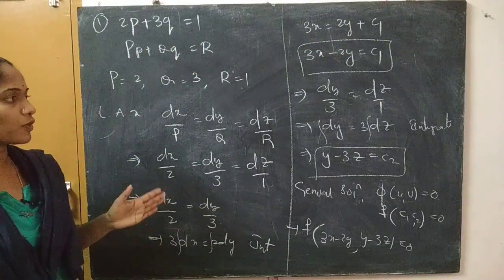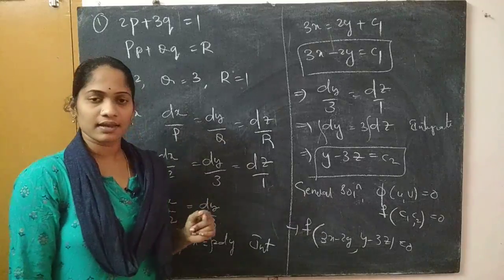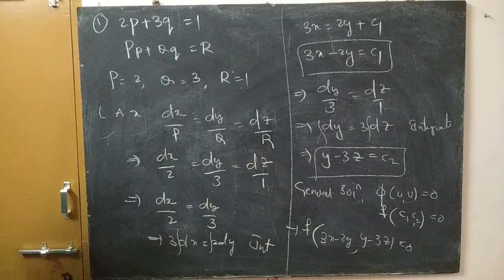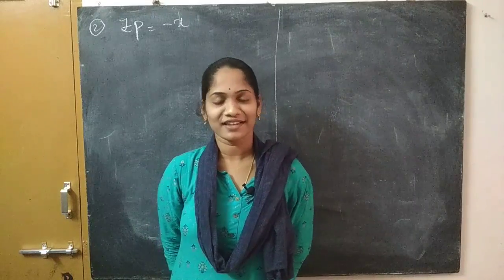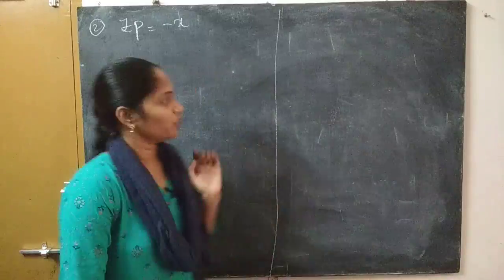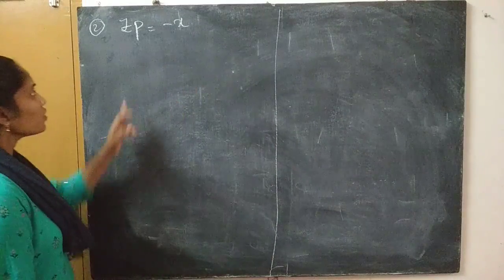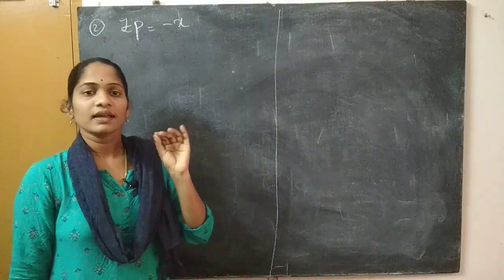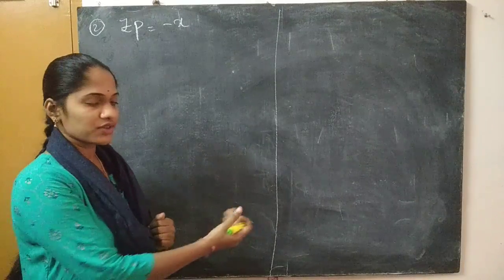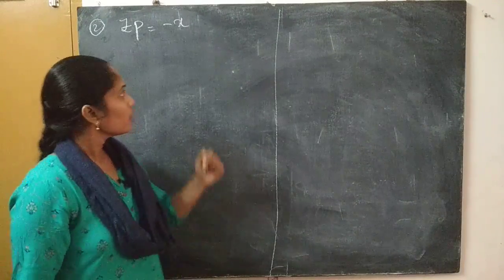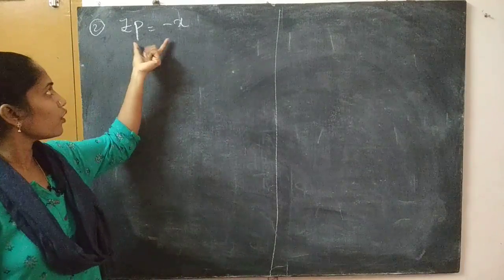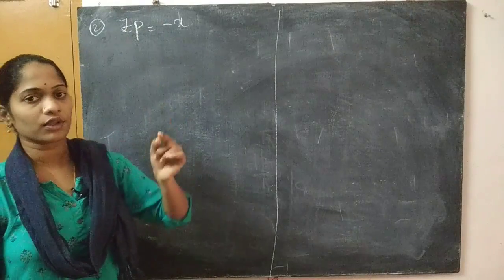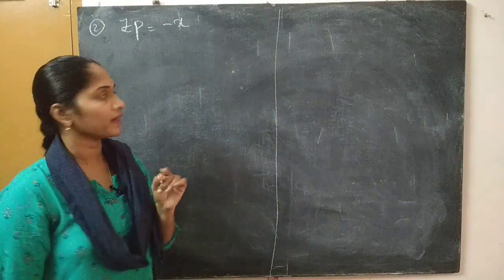This completes the first problem of Type 1. Let us see the next problem. The second problem is: 2zp equals minus x. This is our given PDE and we need to find the general solution. After observing the problem, you have to write it in quasi-linear PDE form.